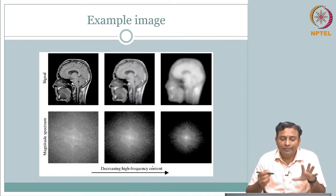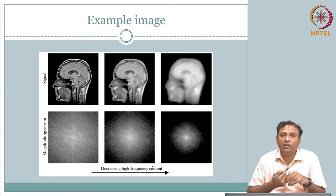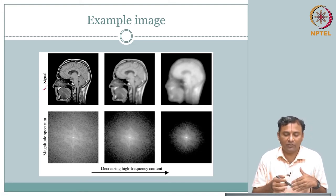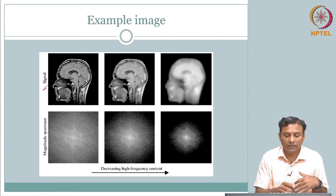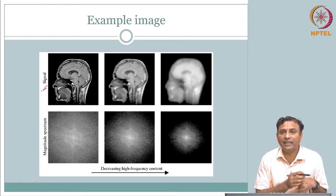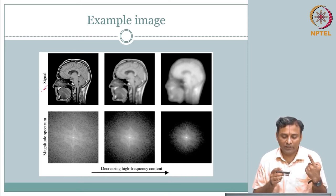Let us now use one slide to give the big picture of what we mean by frequency components and how to visualize them. In the first row, you see a signal with two dimensions x and y — we are visualizing this two-dimensional signal as an image. You can see a head — a sagittal view. The pixel values have different shades, black to white, depending on the value they contain.